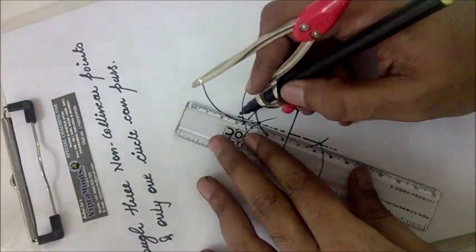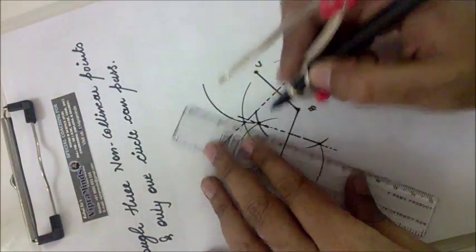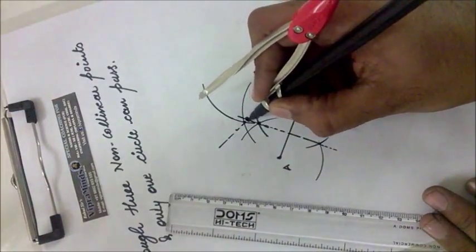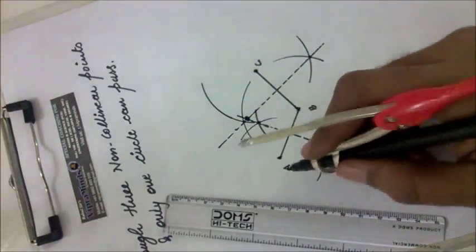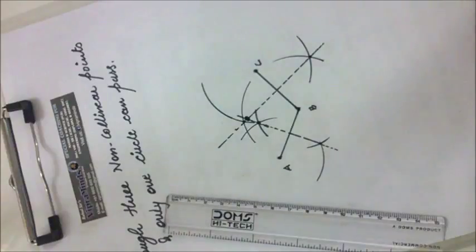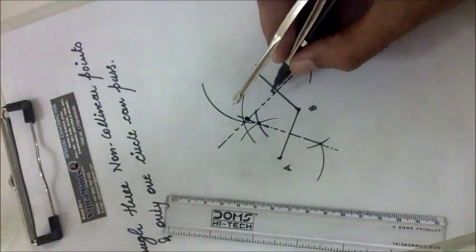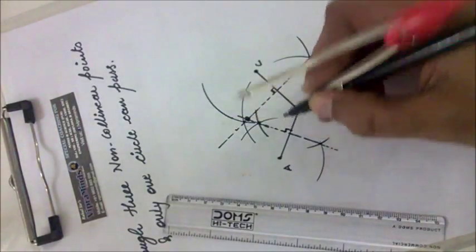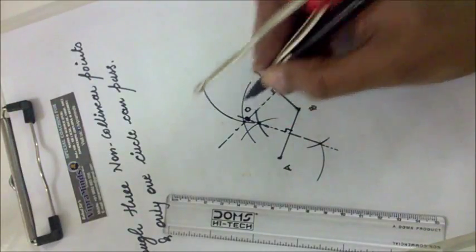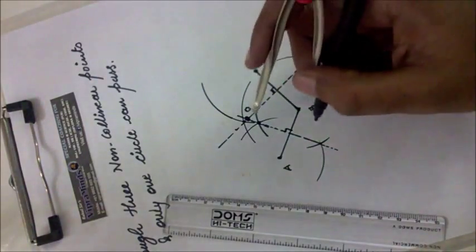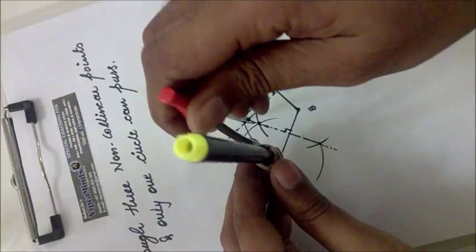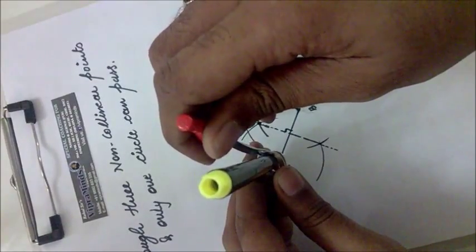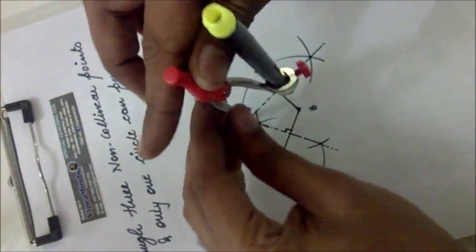Now these two perpendicular bisectors — the perpendicular bisector of AB and the perpendicular bisector of BC — are intersecting at a point. Let that point be O. We will take O as the center and OA as the radius, which equals OB or OC.